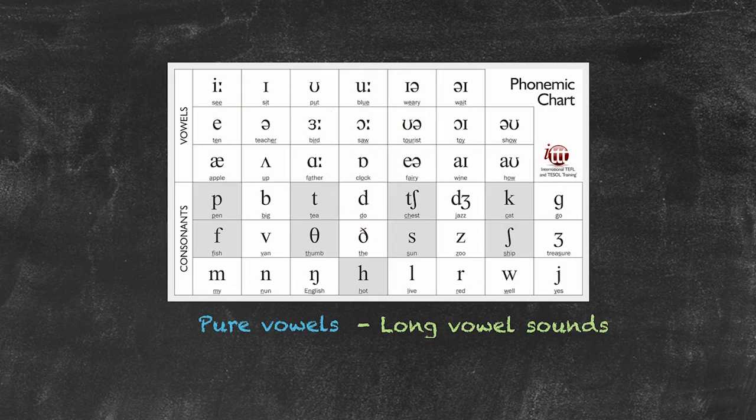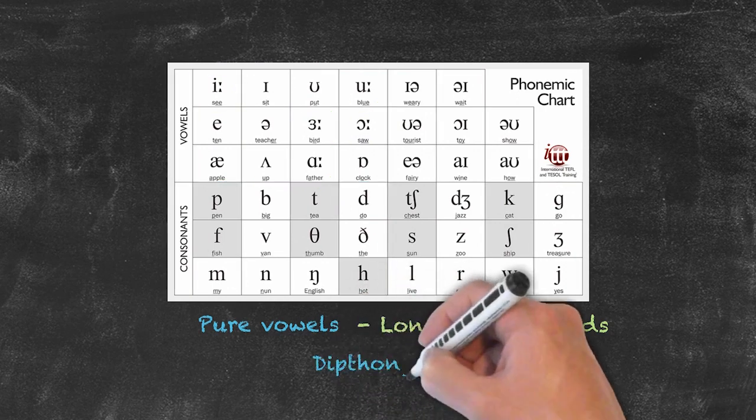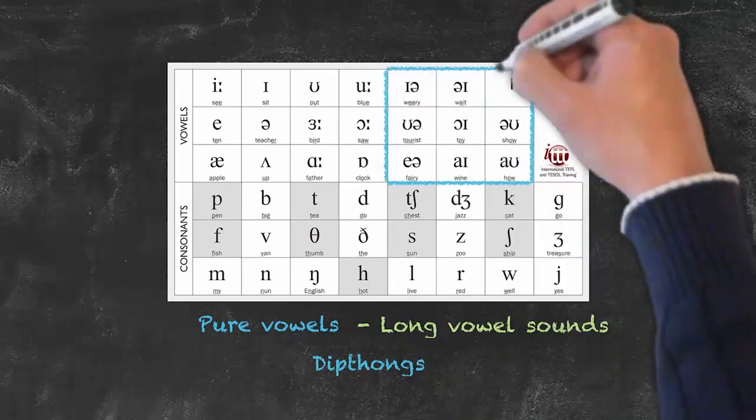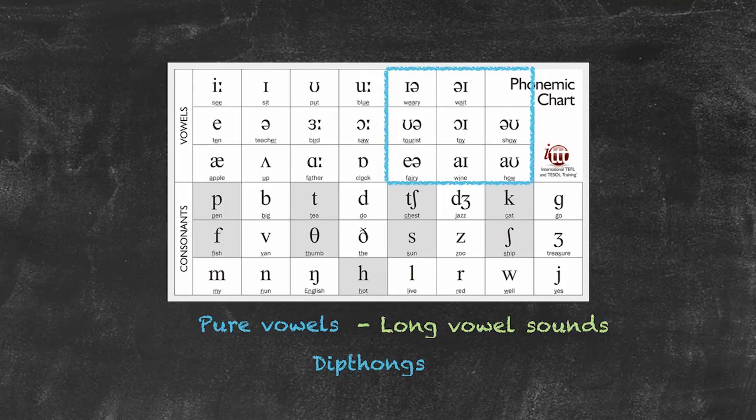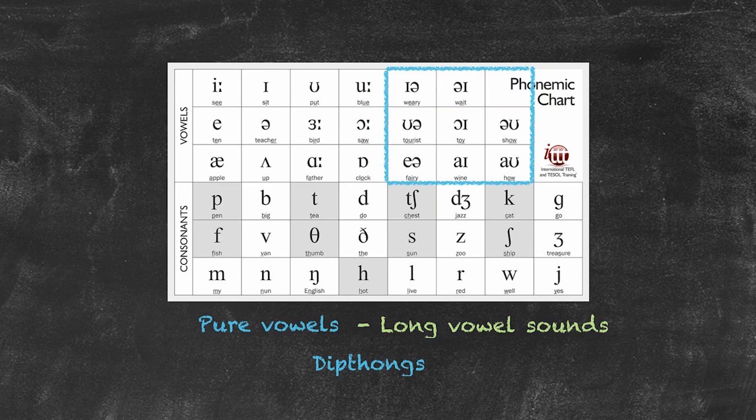Secondly, we have what are called the diphthongs. The diphthongs combine two vowel sounds in such a way that it's impossible to split them and still pronounce the word correctly. Our diphthongs also require a movement in the mouth in order for that vowel sound to be made.